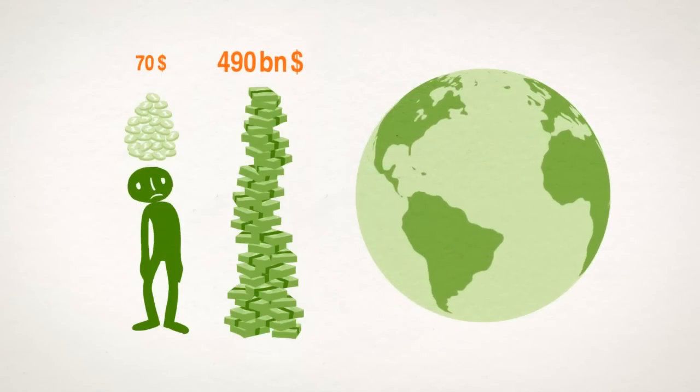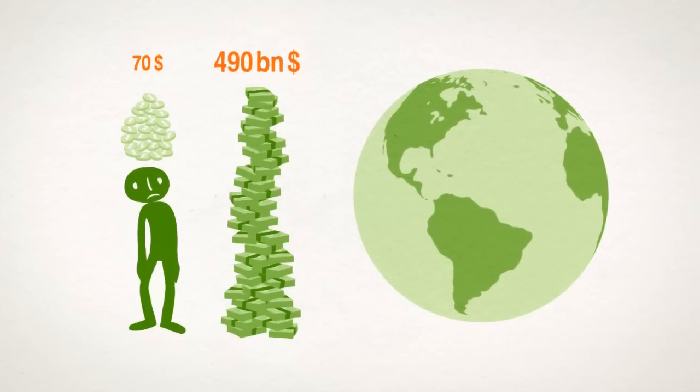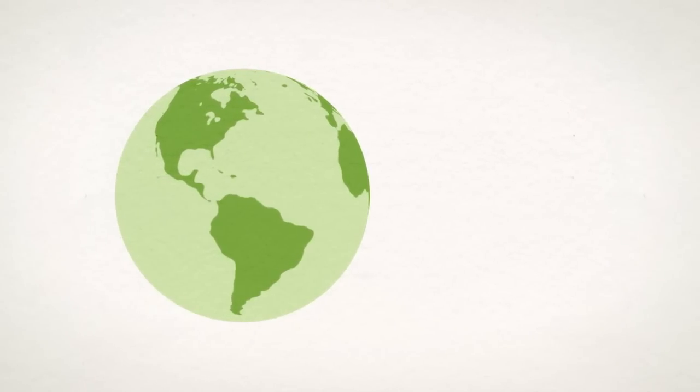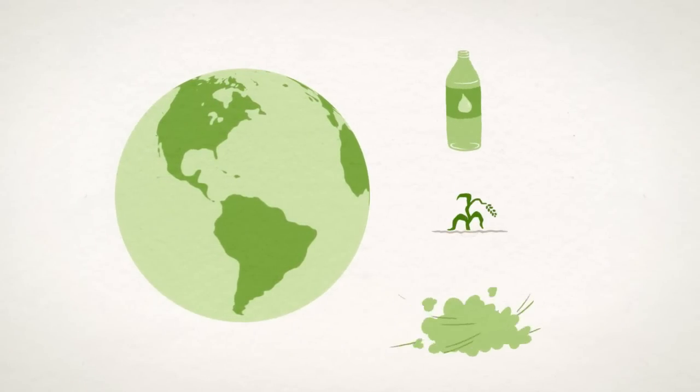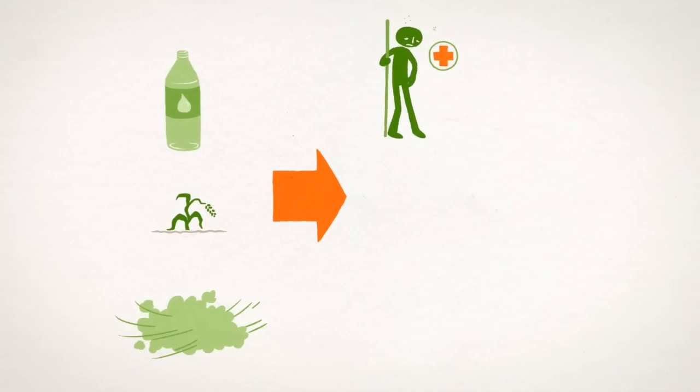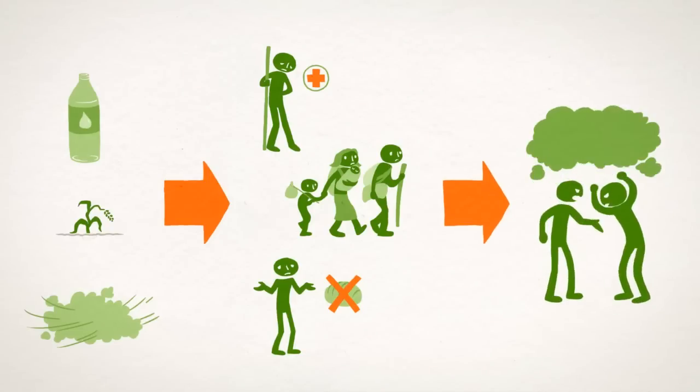To this one needs to add the indirect costs of environmental and humanitarian disasters, such as water shortages, yield shortfalls or dust storms. The consequences? Damage to health, forced migration, famine and eventually conflict.